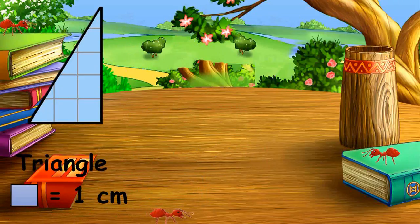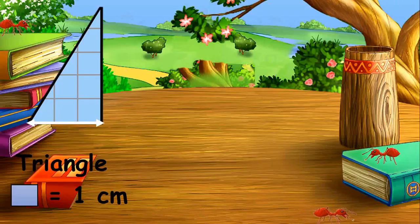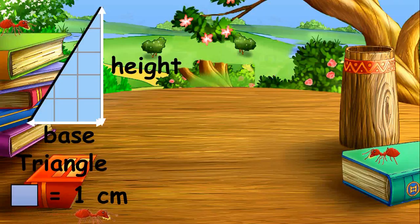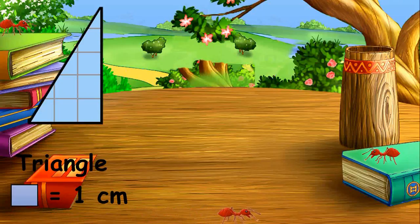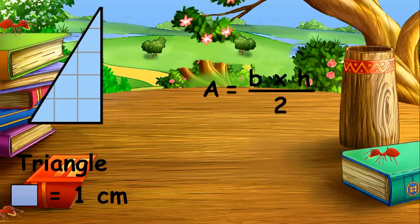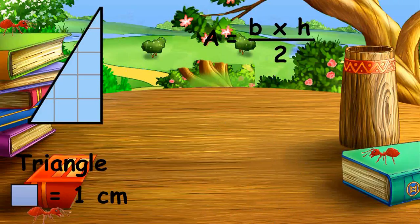To find the area of a triangle, multiply the base by the height and then divide by 2. The division by 2 comes from the fact that a parallelogram can be divided into two triangles. Let's go and take the area of the triangle.